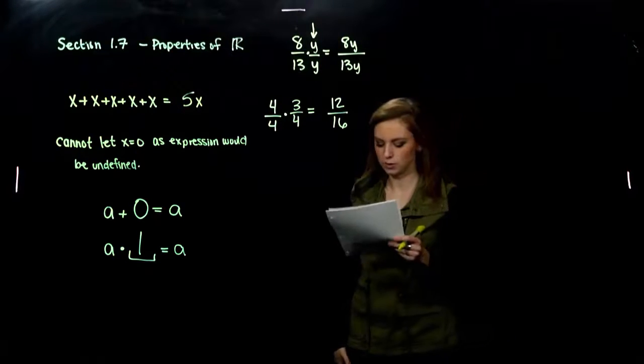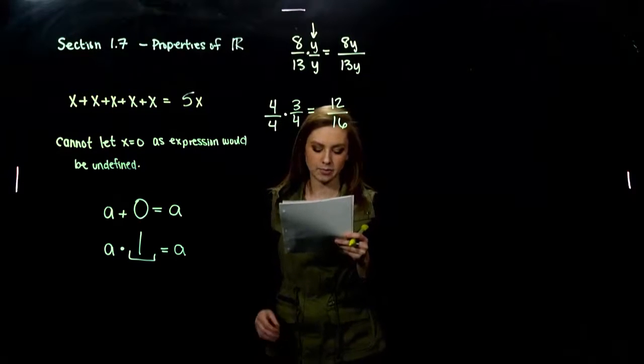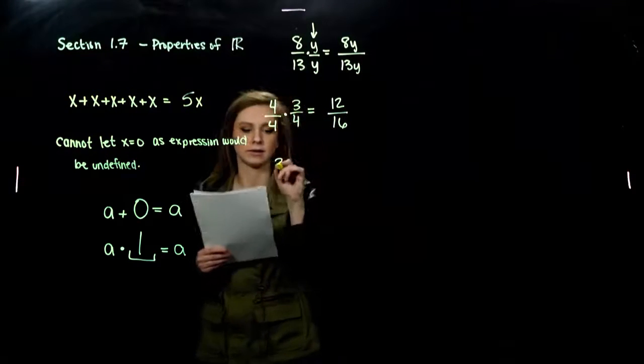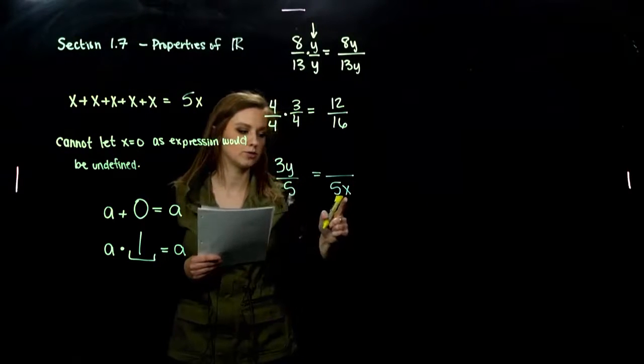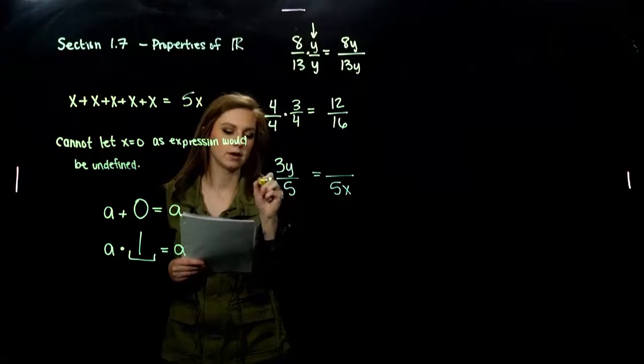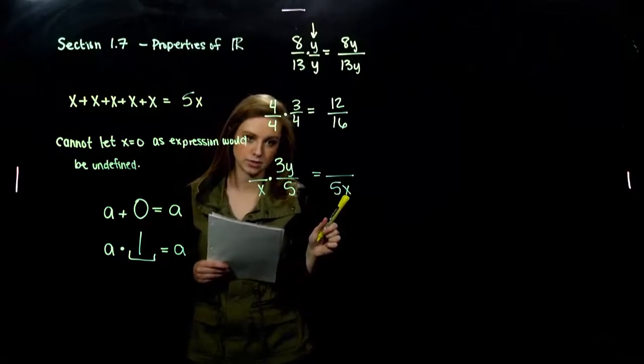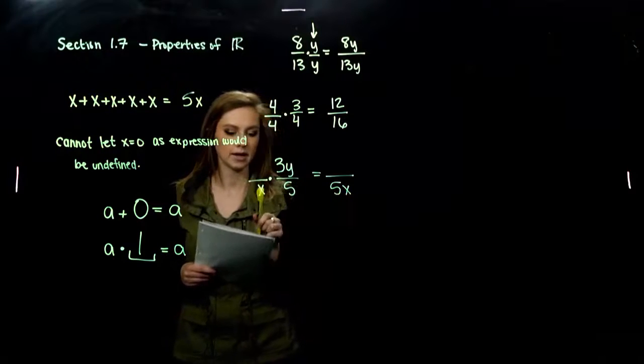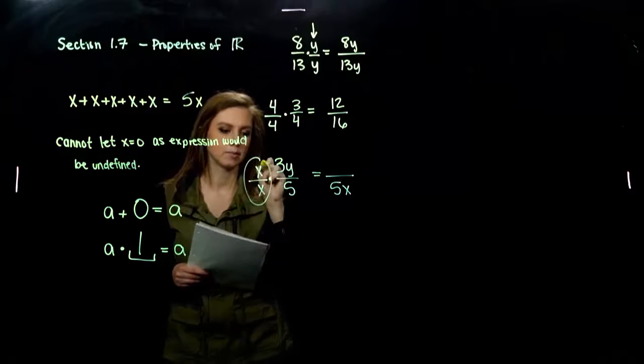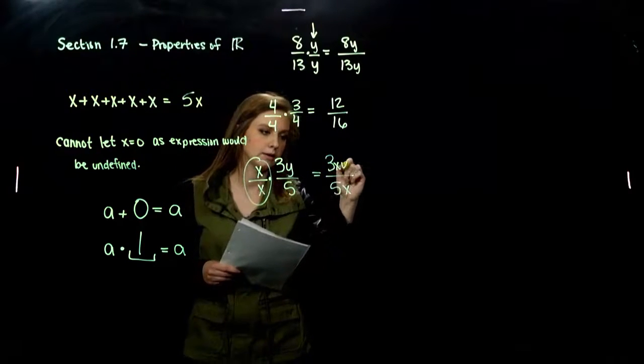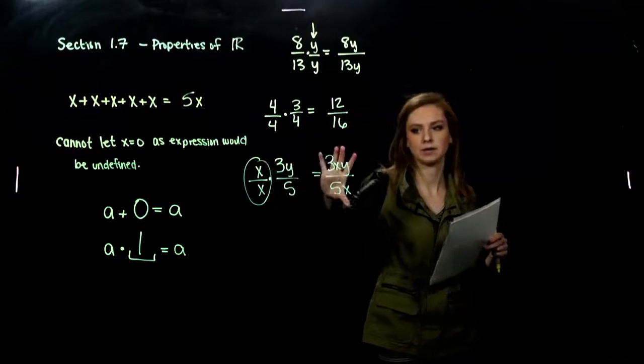Alright, one for you to try. Write a fraction expression equivalent to 3y over 5 with a denominator of 5x. So, what did you have to multiply 5 by to turn into 5x? Factor of x, and x can't be 0 since I'm introducing it in the denominator now. And again, whatever I do to the bottom, I have to do to the top. Because in reality, multiplying by 1, changing what it looks like, not changing the value overall. But again, simplified, not simplified.